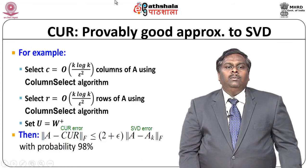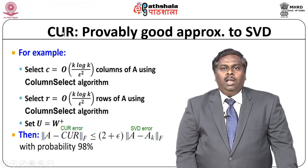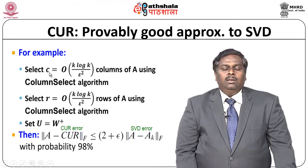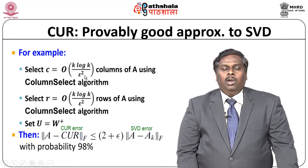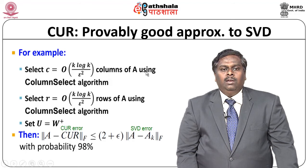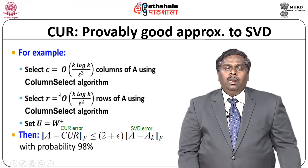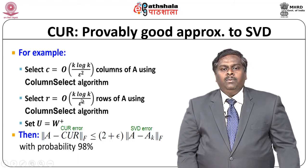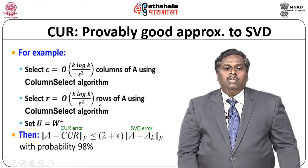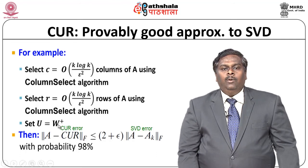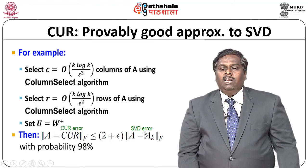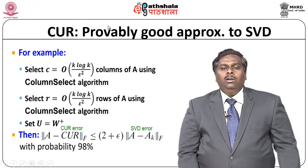In the CUR algorithm, the selection of C is done in the order of k log k divided by epsilon squared, based on columns of A using the column-select algorithm. Similarly, selecting R is done in the order of k log k divided by epsilon squared rows of the original matrix A using the same column-select algorithm. The U matrix is set as the inverse of the singular values represented by matrix W. The CUR error when compared with the SVD error is going to be twice that of the SVD error, which proves that CUR outperforms SVD.